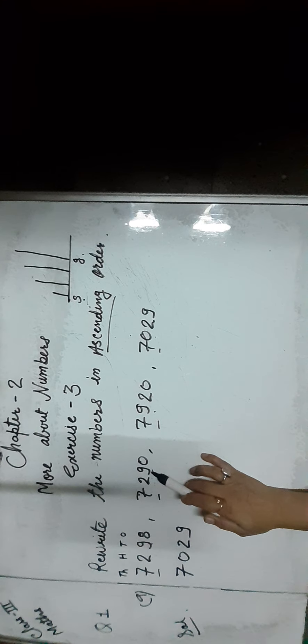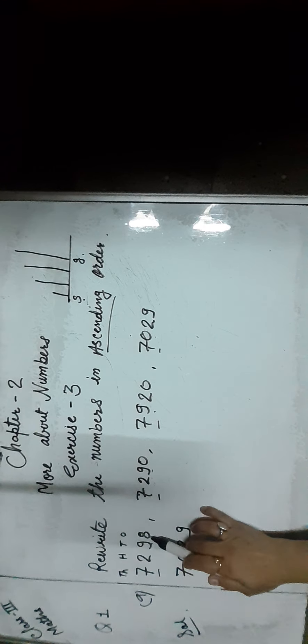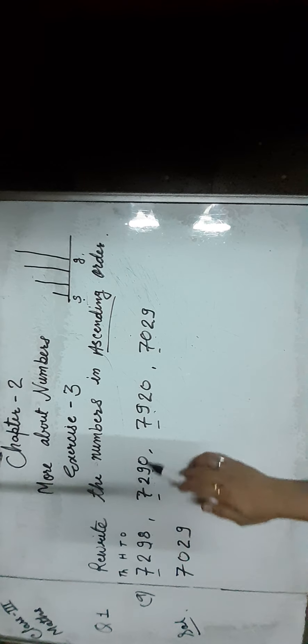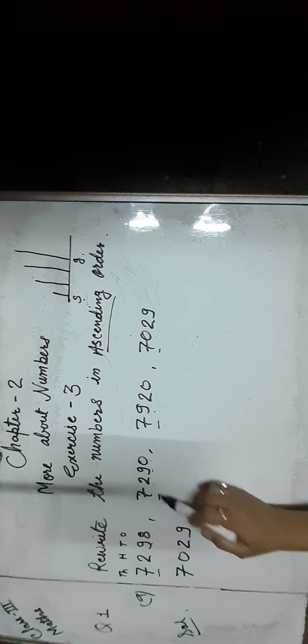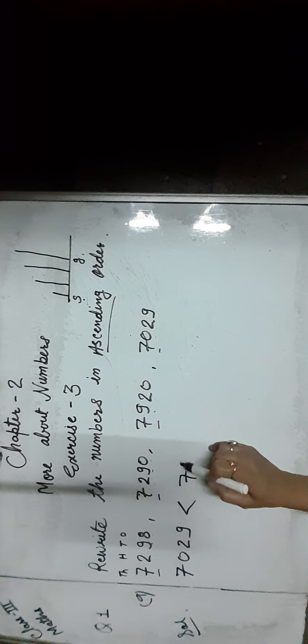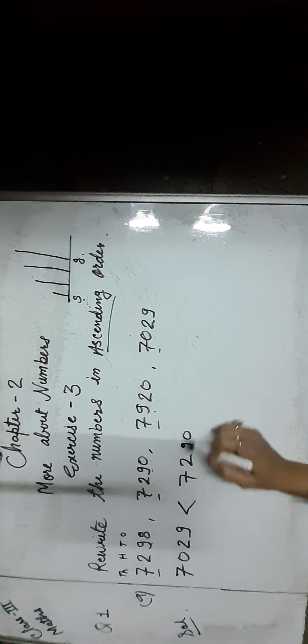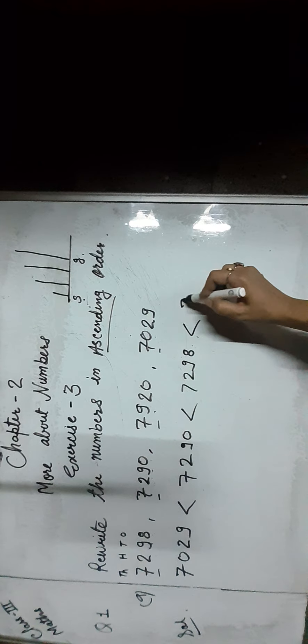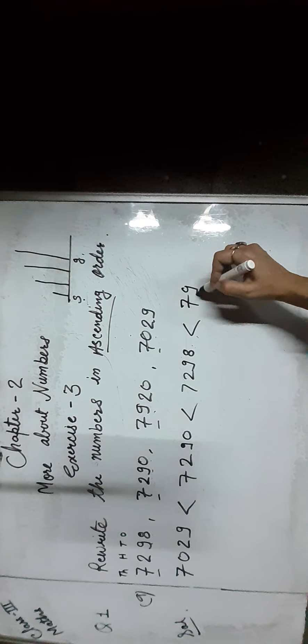The 10s place digits are also the same, so we move to the 1s place digit — that is 8 and here is 0. And 0 is smaller than 8, so we write 7,290. Then at last we write 7,920.